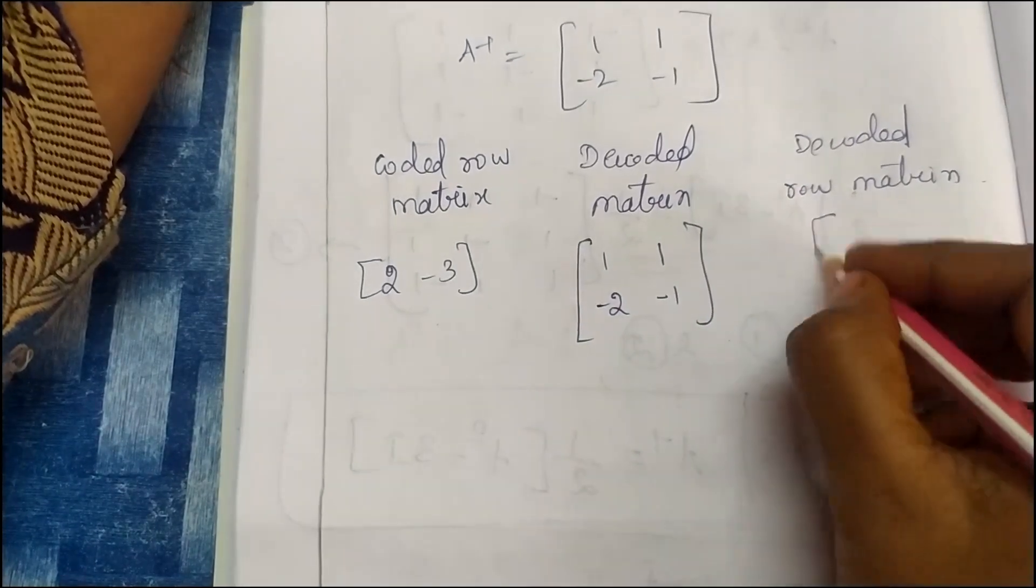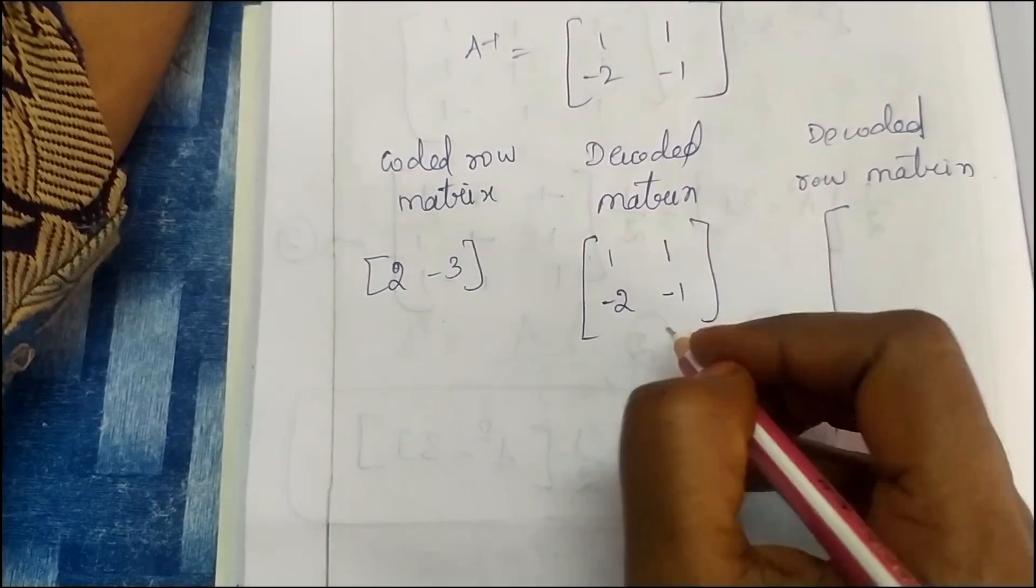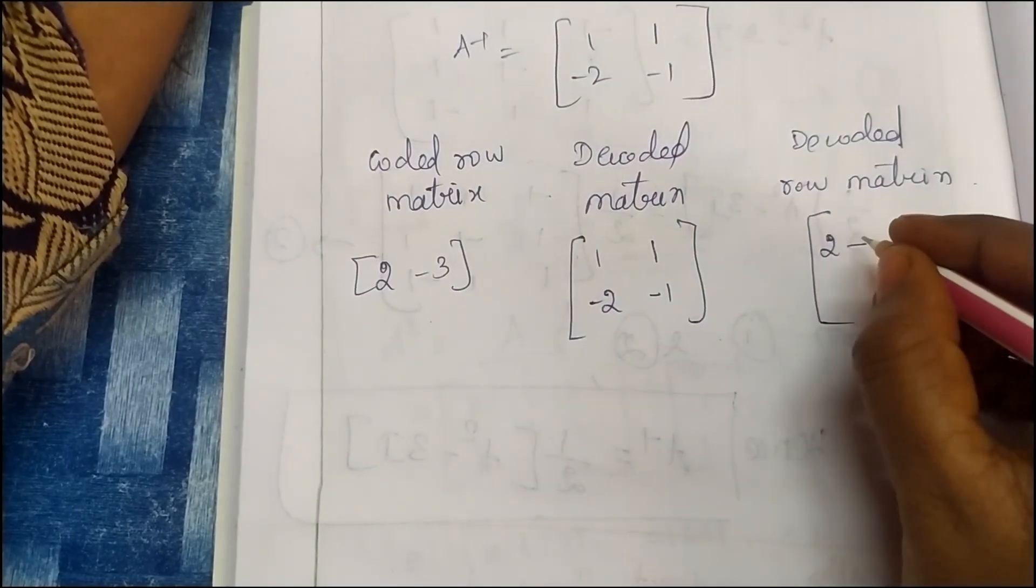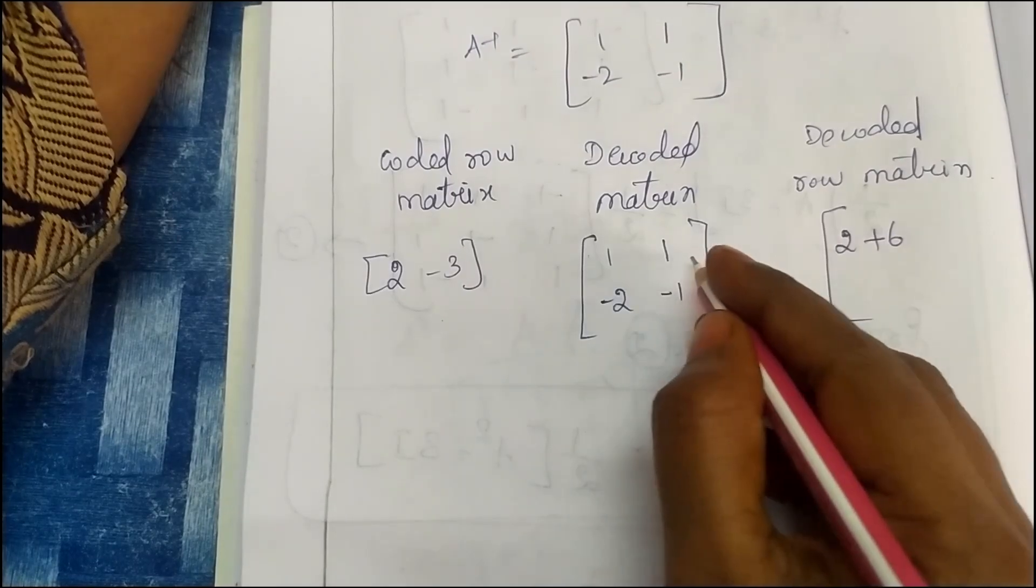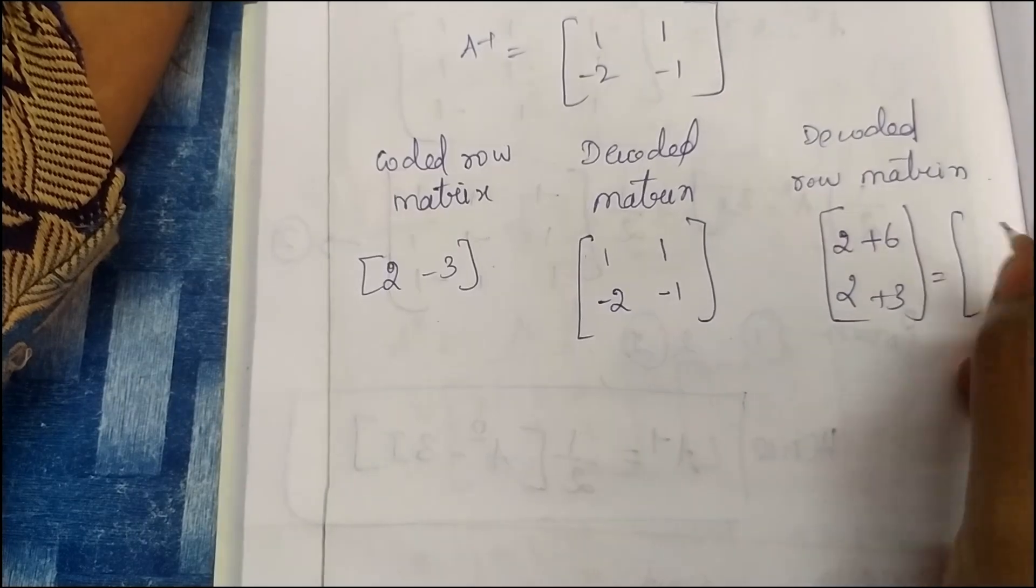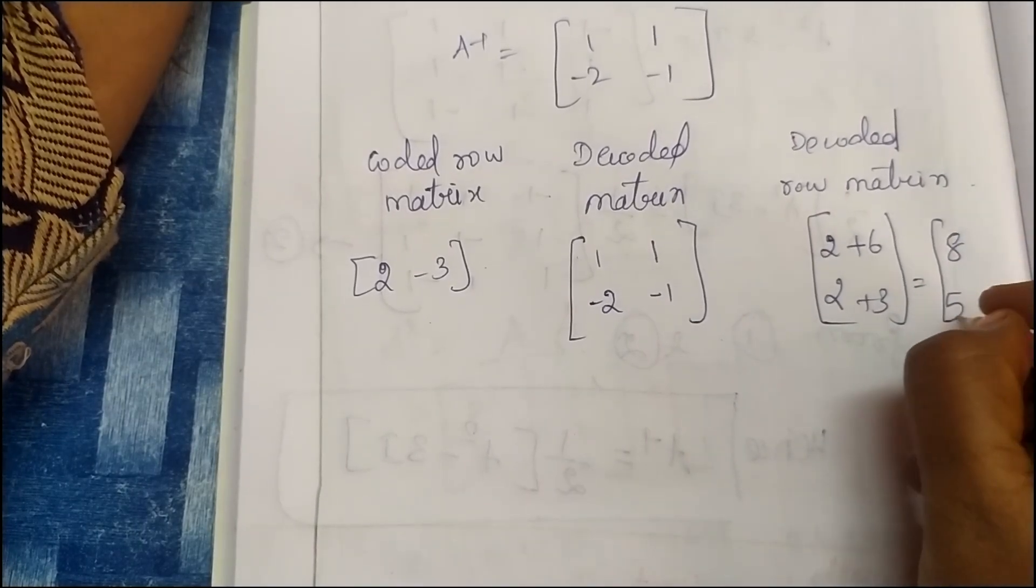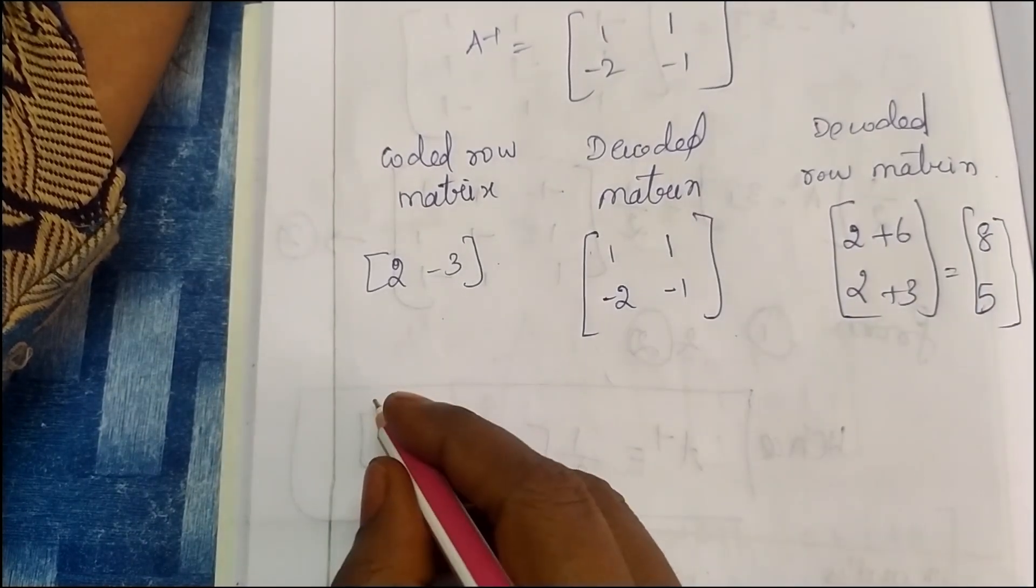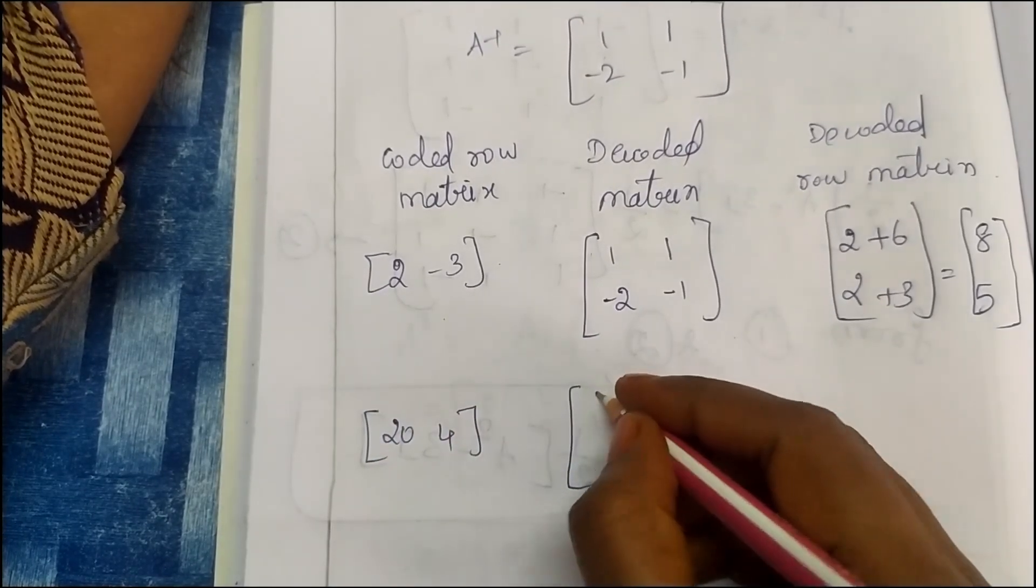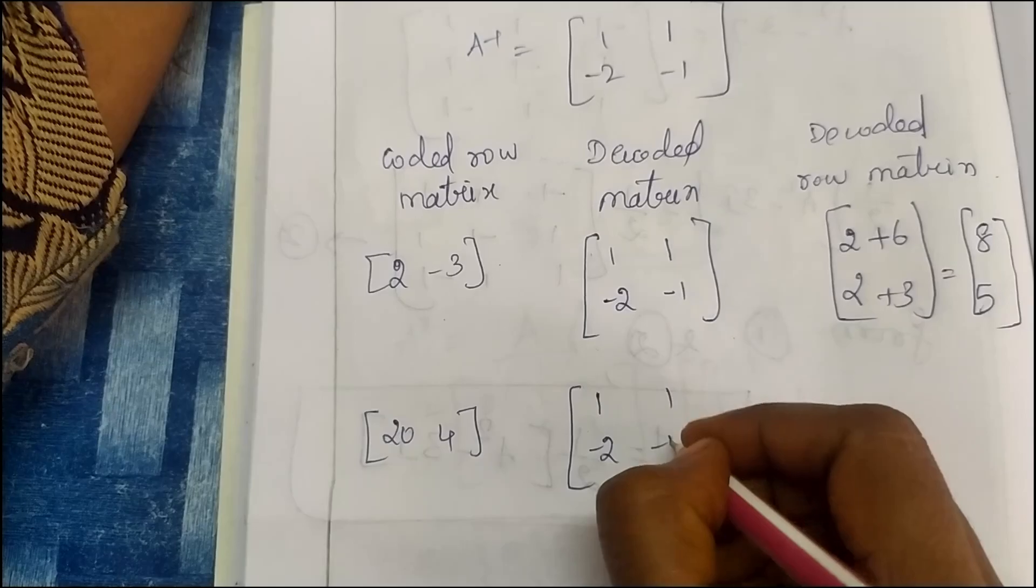When the product is done, first row, second row, row-wise, column-wise. 2 times 1 is 2, minus 3 times minus 2 is plus 6. That is 2 plus 6 equals 8. Then minus 3 times minus 1 is plus 3, equals 5. So here is the second row, 24. 1, 1, minus 2, minus 1.